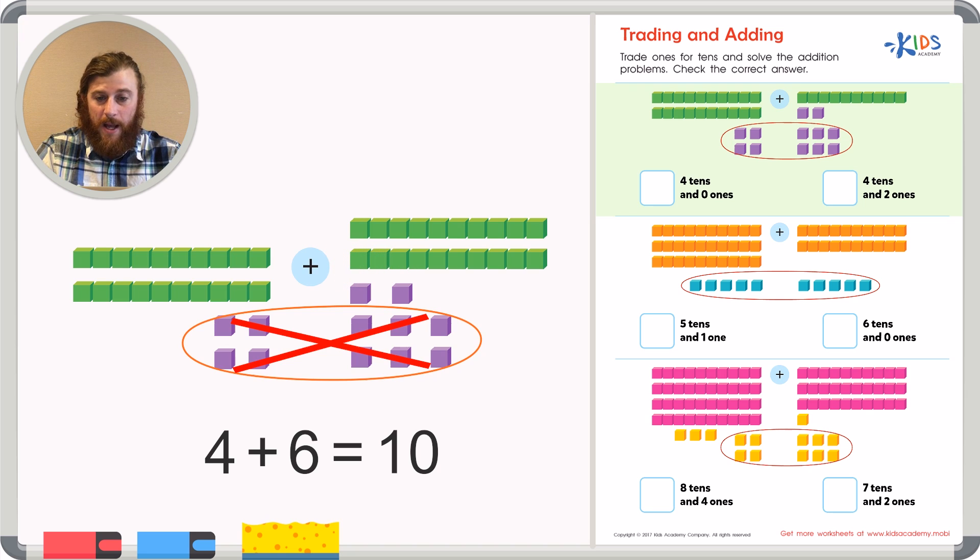Then I can count my tens: one, two, three, four tens, giving me a total of four tens and two ones.